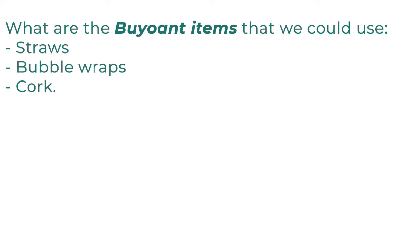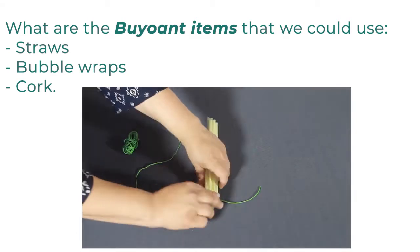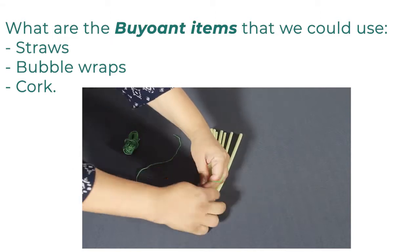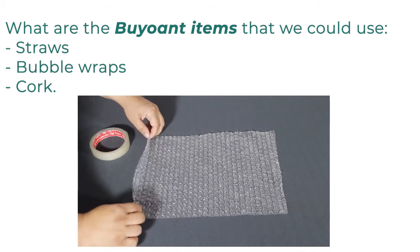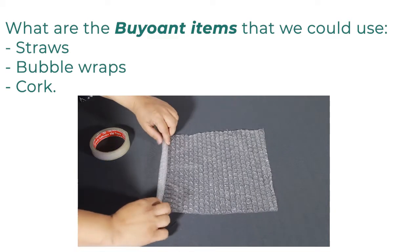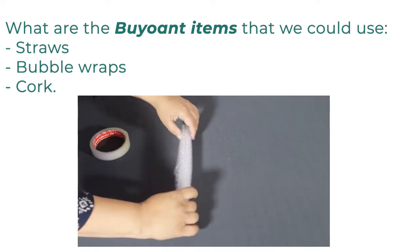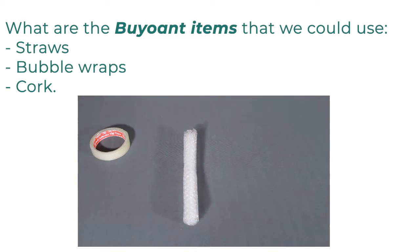Let's keep these items ready. Make a roll of straws: take a few straws and secure them together with a string. Make a roll of bubble wraps: take a bubble wrap sheet, roll it, and secure it with a tape or a string. We can make a sinkable item float by securely attaching it to these buoyant items.